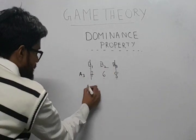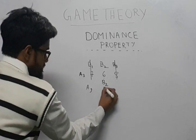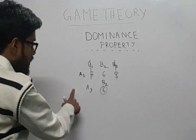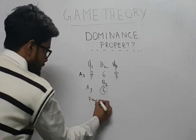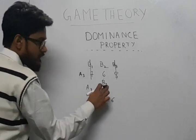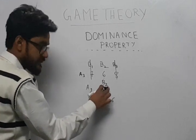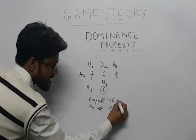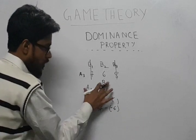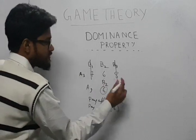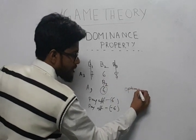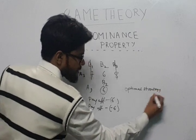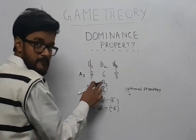So we are left with A3, B2, 6. So we would say the payoff for player A or player 1 is 6, and player 2, that is B2, is minus 6. And the optimal strategy is A3, B2.